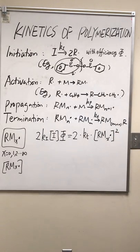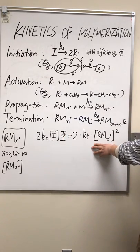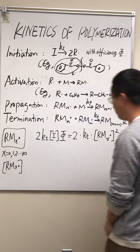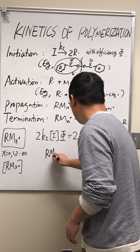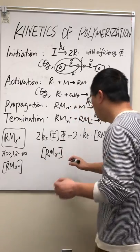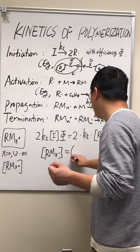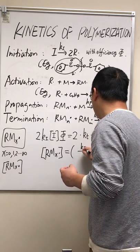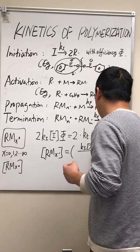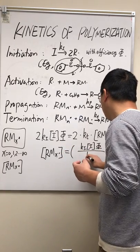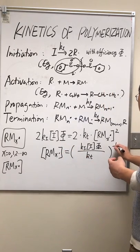Using the steady-state approximation, we can get the expression for the concentration of the radical chains. Setting the rate of radical production equal to the rate of removal, the concentration of all radical chains is equal to the square root of (kI times I times φ) divided by kT.